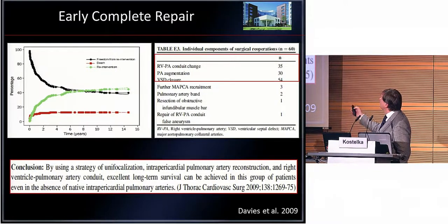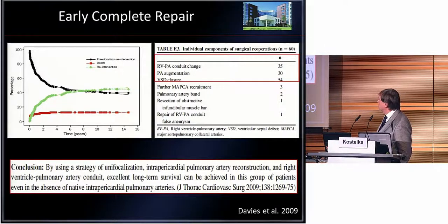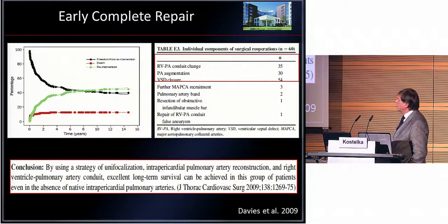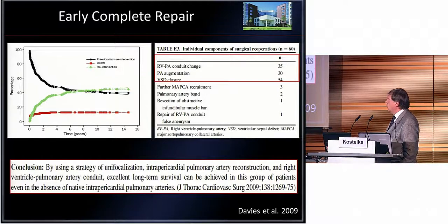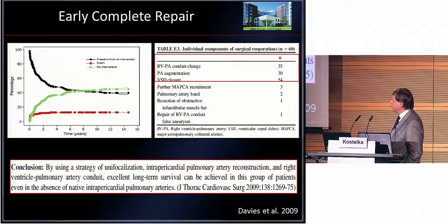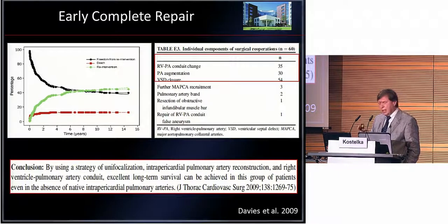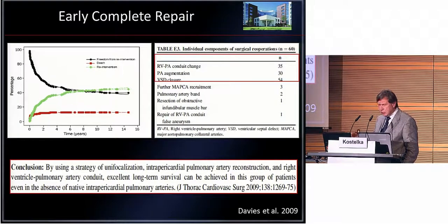The reoperations include PA conduit change in 35%, augmentation at 30 years, and VSD closure in 54%. His conclusion is that using a strategy of unifocalization, intrapericardial pulmonary artery reconstruction, and right ventricle-pulmonary conduit, excellent long-term survival can be achieved even in this group of patients, even with absence of intrapericardial pulmonary arteries. But again, we have only a follow-up or actual survival of three years and no more — even in such a large series, we have no information about further development after five or ten years.